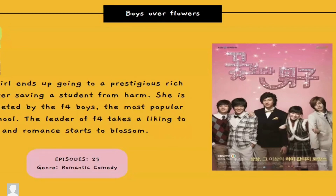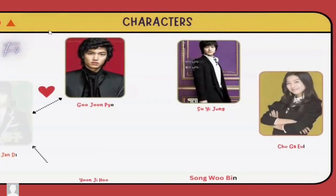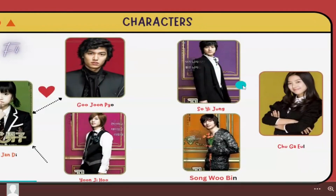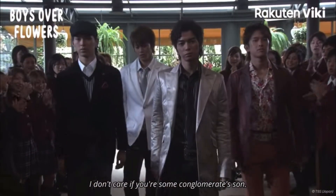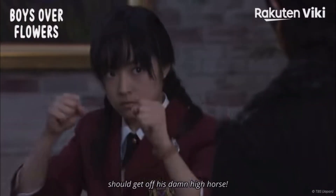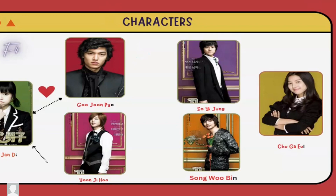Boys Over Flowers is about a young girl who ends up going to a prestigious rich school after saving a student from harm. She is then targeted by the F4 — the most popular boys in school — and the leader takes a liking to her and a romance starts to blossom. The F4 are Gung Jun Pyu, So Yin Jong, Yun Chi Hoo, and Seo Mu Bin. The main character is Gung Jun Di and her best friend is Chu Kai. This is a really classic drama — it came out in 2005 and is based on a manga.